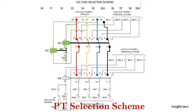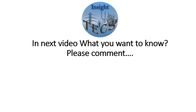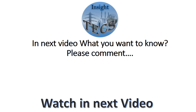So friends, this is how the PT selection scheme works. In this panel board, we have PT for bus one, PT for bus two, and the selection procedure is done through the contactor. The selected PT moves further into this common bus for metering and protection purpose. I hope the idea about PT selection scheme has been clear to you. In the next video, you can mention in the comments below what you want to learn. Keep watching our videos. Thank you.